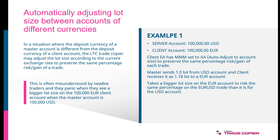Let's look at an example to understand this. Server: one hundred thousand dollars. Client: one hundred thousand euros. The client EA has the default money management mode set, and it will preserve the same percentage risk or gain of each trade. So if the master sends one full lot size from a USD account, the client receives it as a 1.18 lot on a euro dollar account, taking into account the current exchange rate.